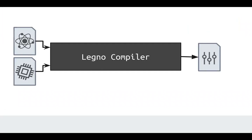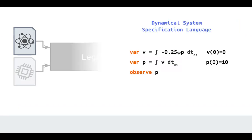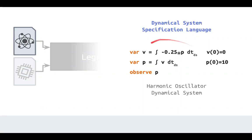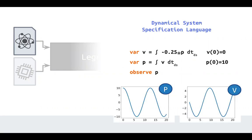Before describing the compiler, let me describe its inputs and outputs. One input is the dynamical system, specified using a dynamical system specification language that describes a first-order ordinary differential equation and indicates which variables to observe. The specific example here is a harmonic oscillator that models velocity and position, observing position over time. Running this for 20 simulation time units produces an oscillating trajectory where position implements the cosine function.